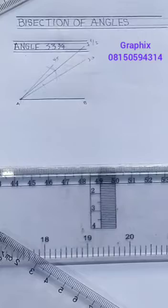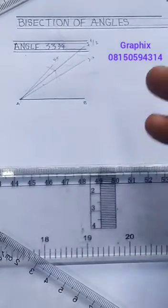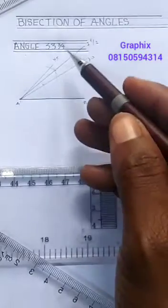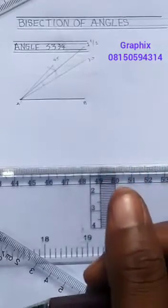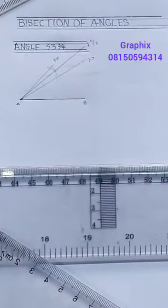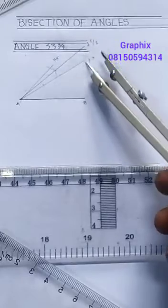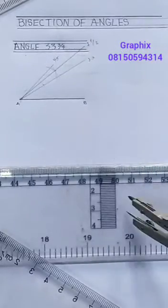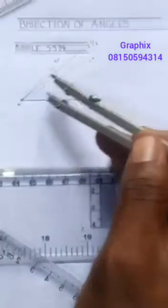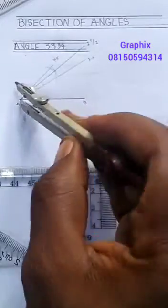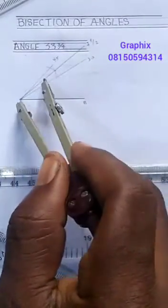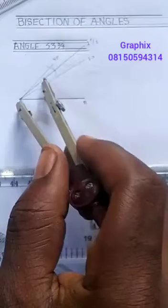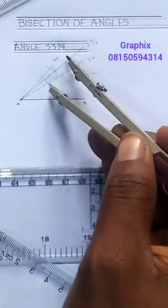But what I actually need is 33 and 3 quarter. So if I bisect 7 and a half again by two, I will have 3 and 3 quarter. So let's do that. 7 and a half again, from here to here is 7 and a half. So I'll place my compass at the same edge here and I will bisect another angle basically at this point, strike an arc.